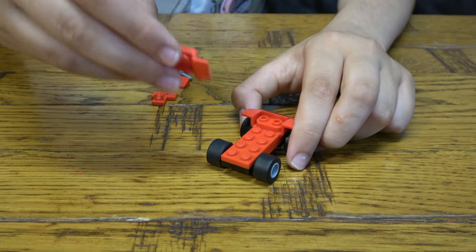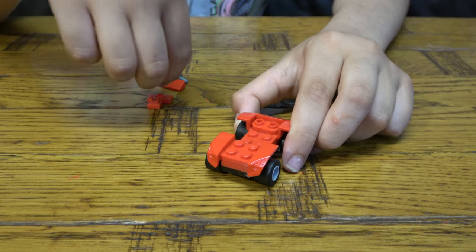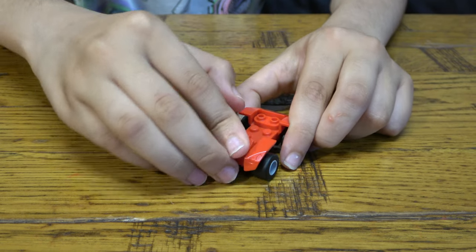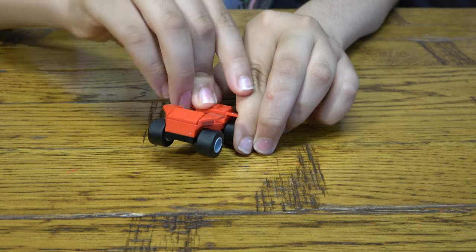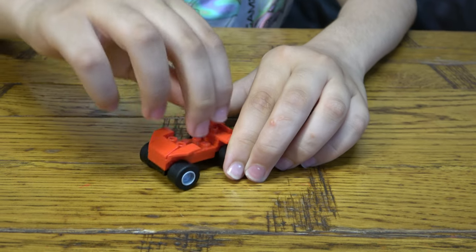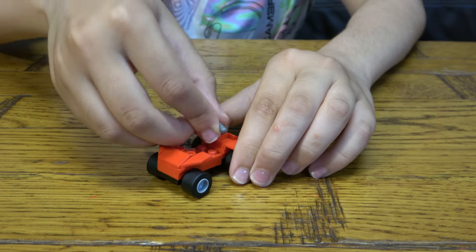Then you're going to put this for the front of the car, place another slope, turn it back around, a jumper, a clip, and a hand.